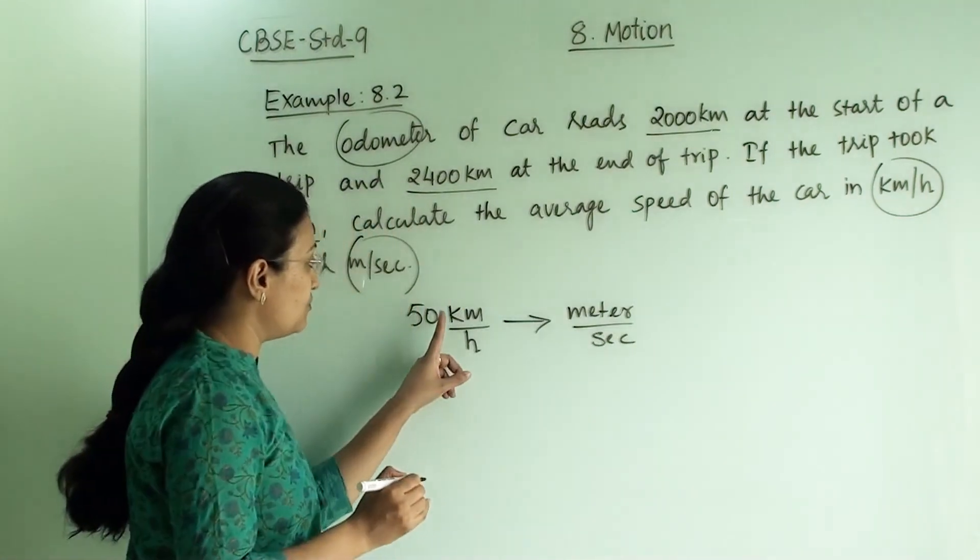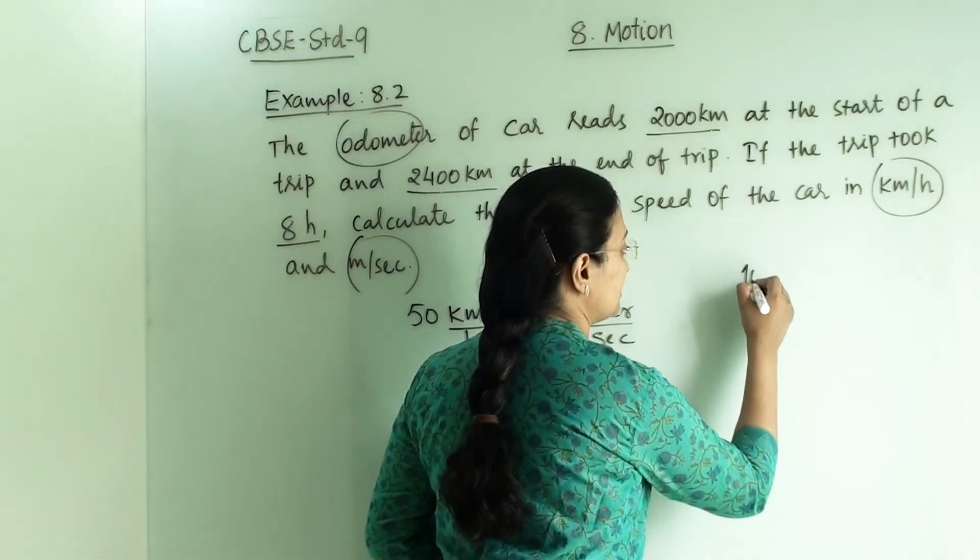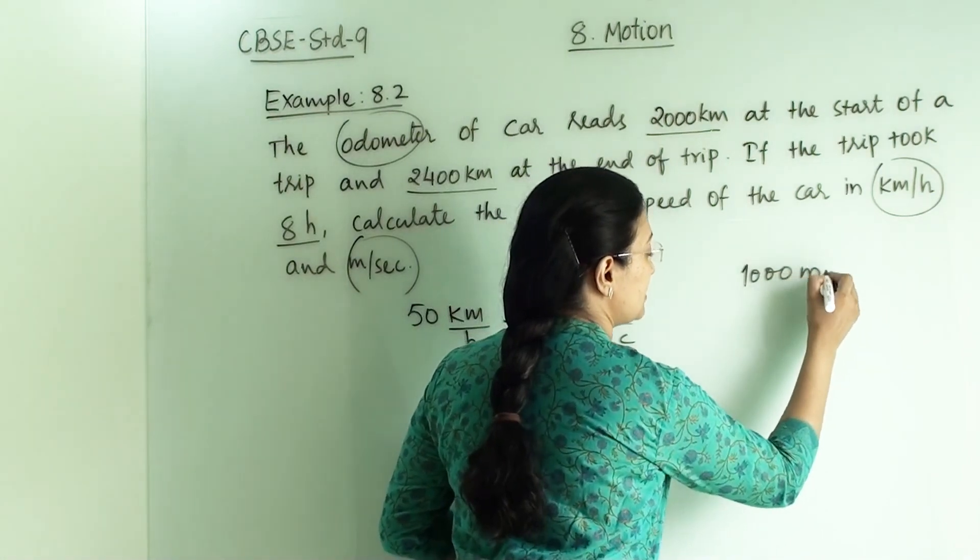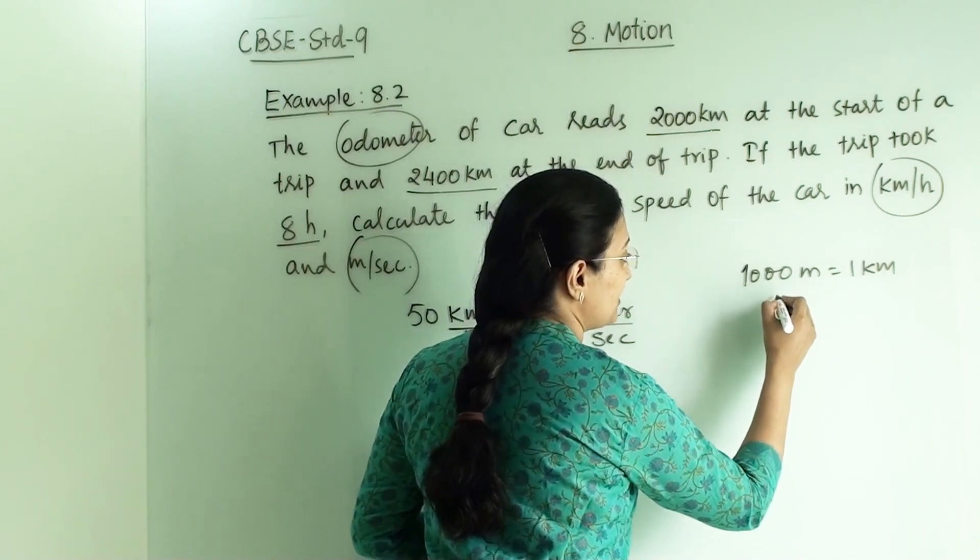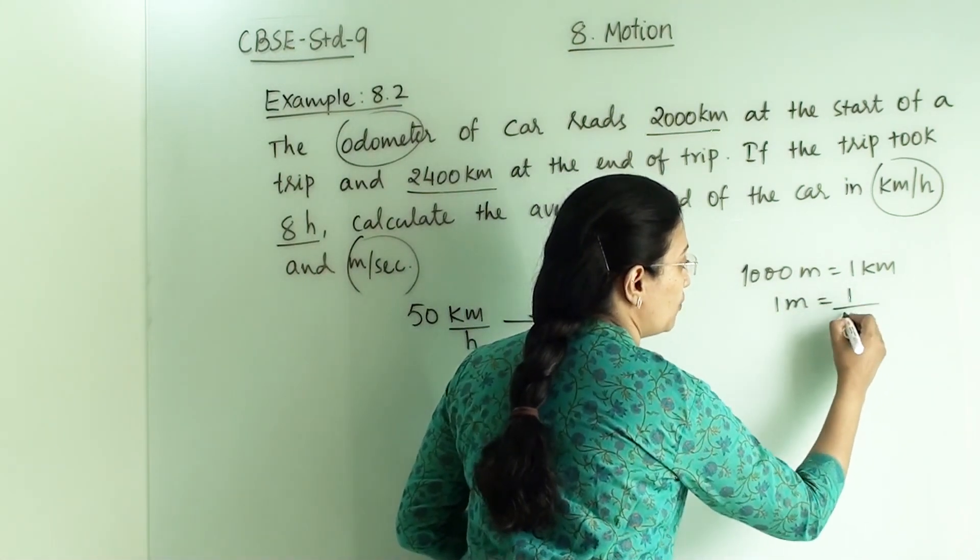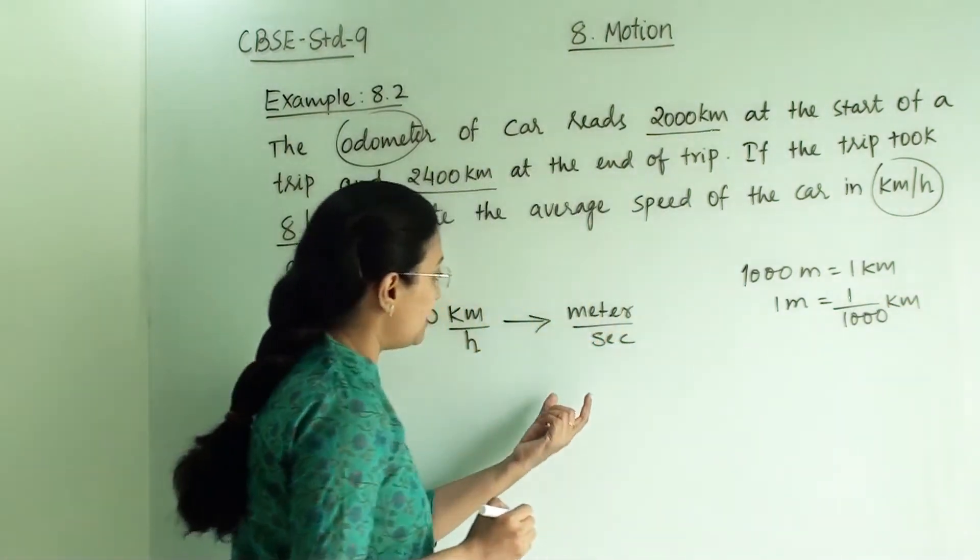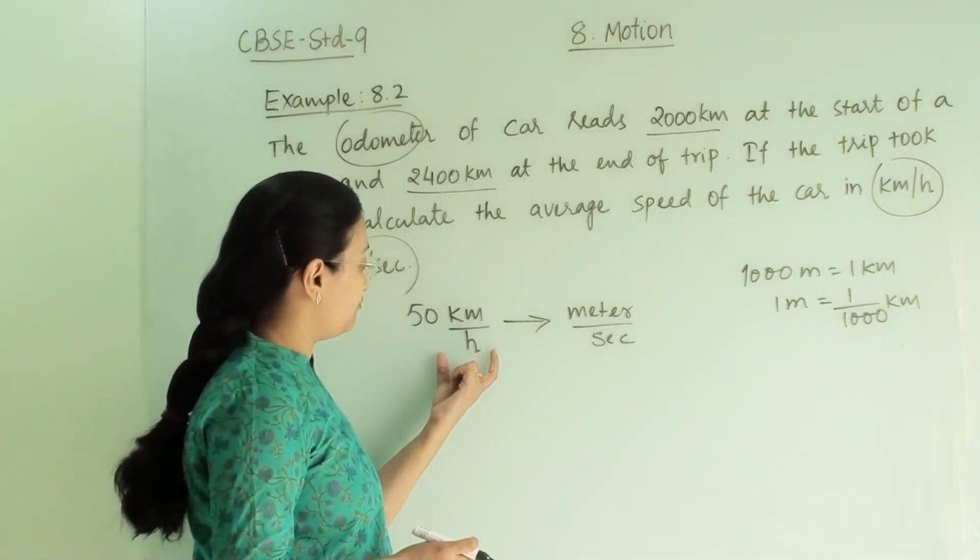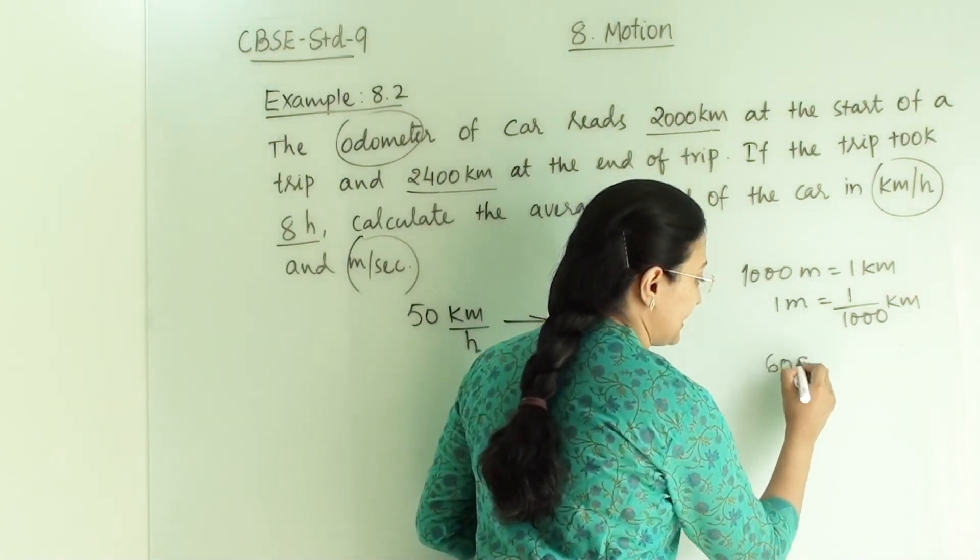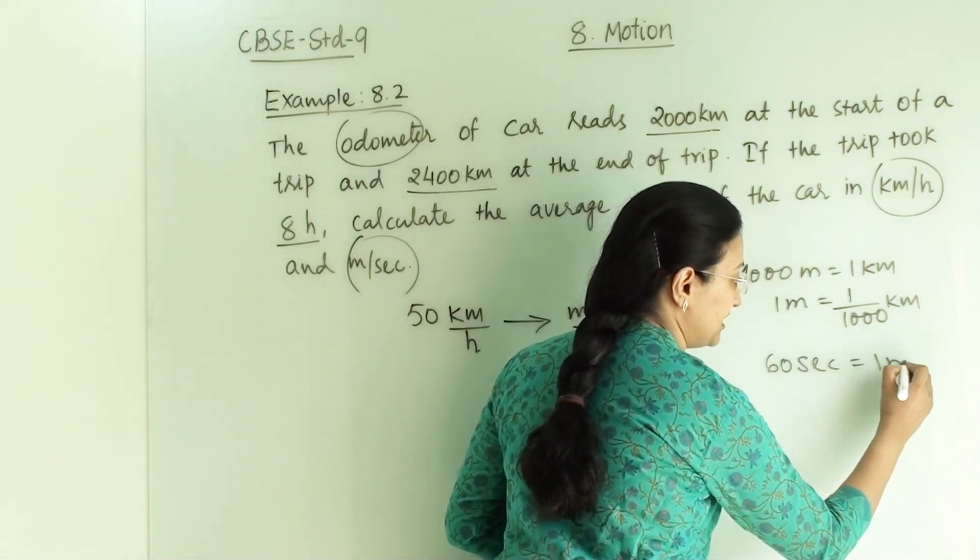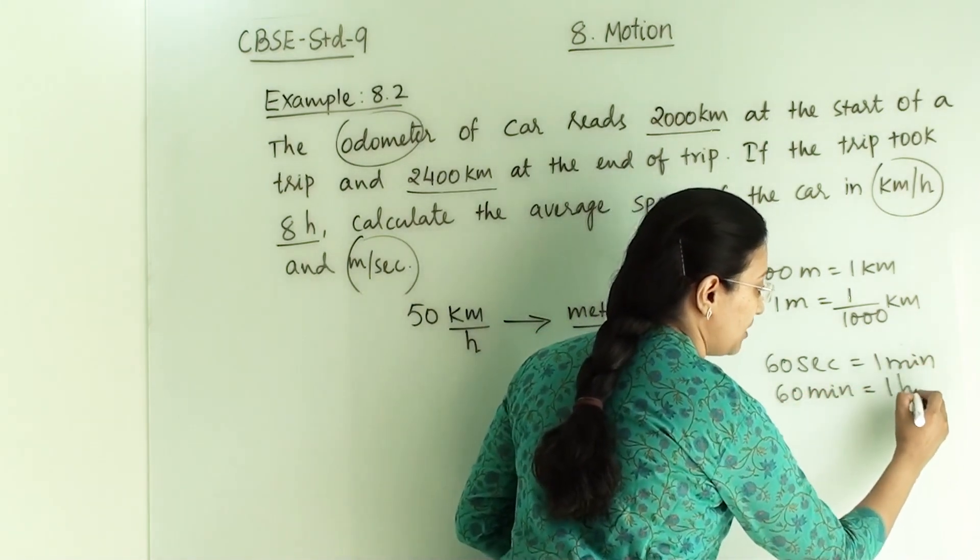Now what is the conversion from kilometer to meter? Let us recall that 1000 meter equals to 1 km, which means 1 meter equals to 1 by 1000 km. Now let us see the conversion factor from hour to second. 60 second equals to 1 minute, and 60 minute equals to 1 hour.